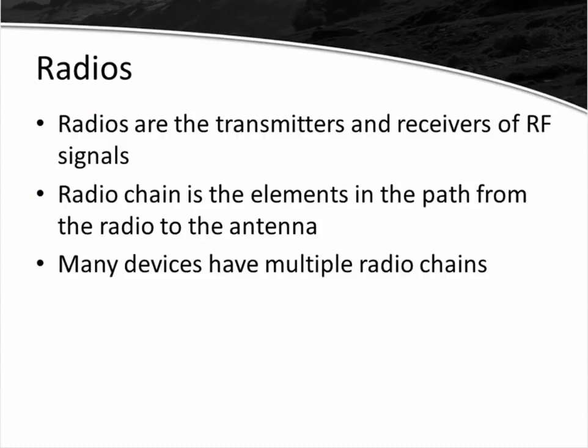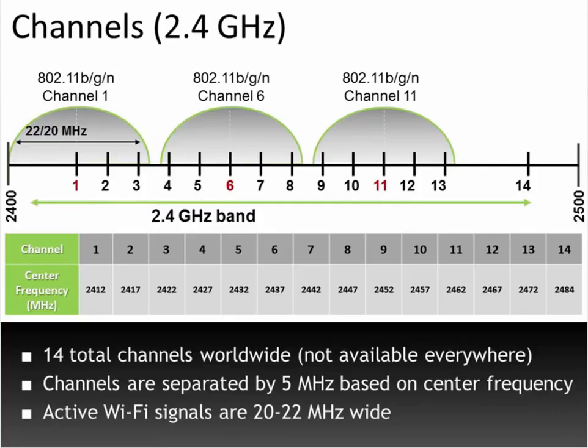Radios are the transmitters and receivers of RF signals. The antenna is not actually the transmitter — it's the radiator; it simply allows electromagnetic waves to propagate out into free space. The transmitter is the entire radio chain: the combination of the radio, any cables or connectors, and the antenna — all together called an intentional radiator. Many devices have multiple radio chains, so when you see three-by-three, that means there are three radio chains and we can send out three spatial streams.